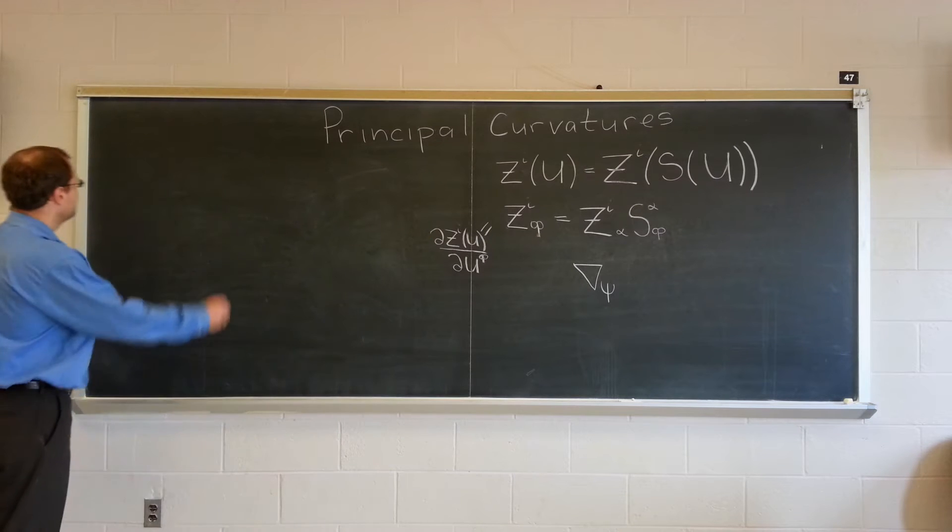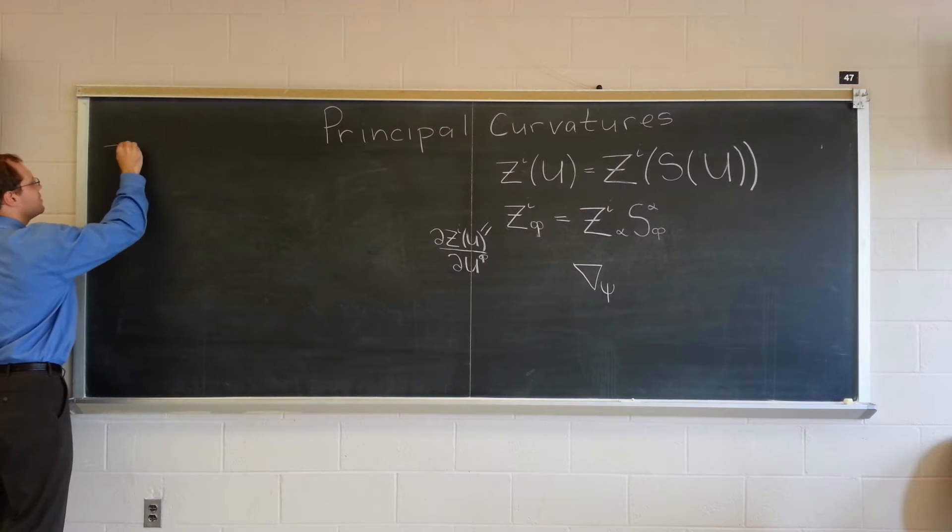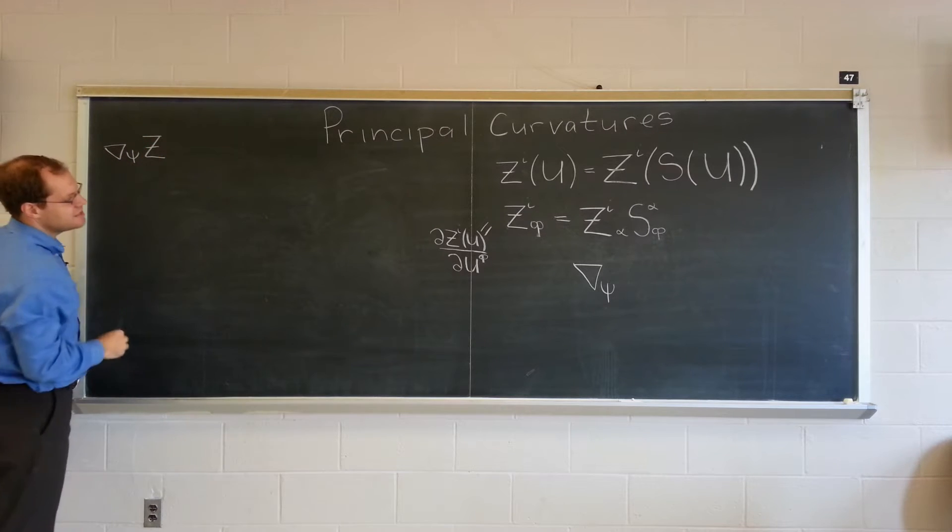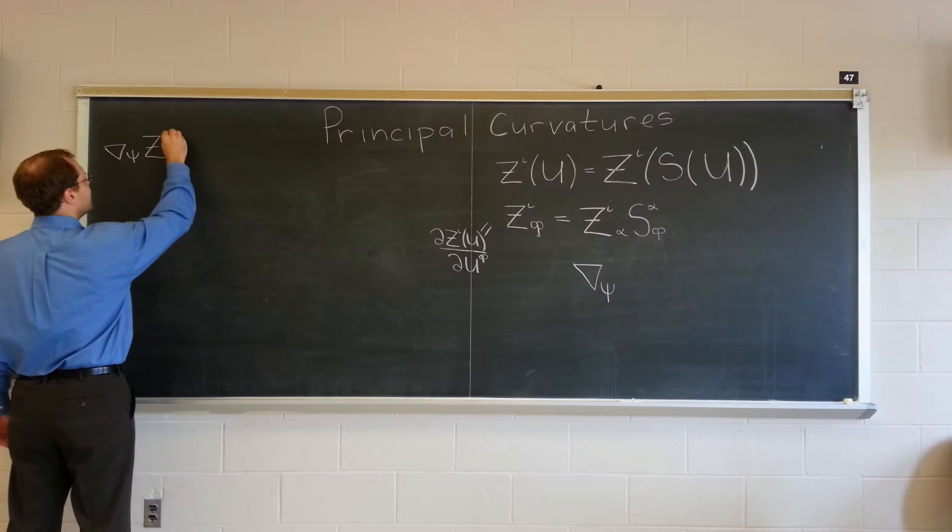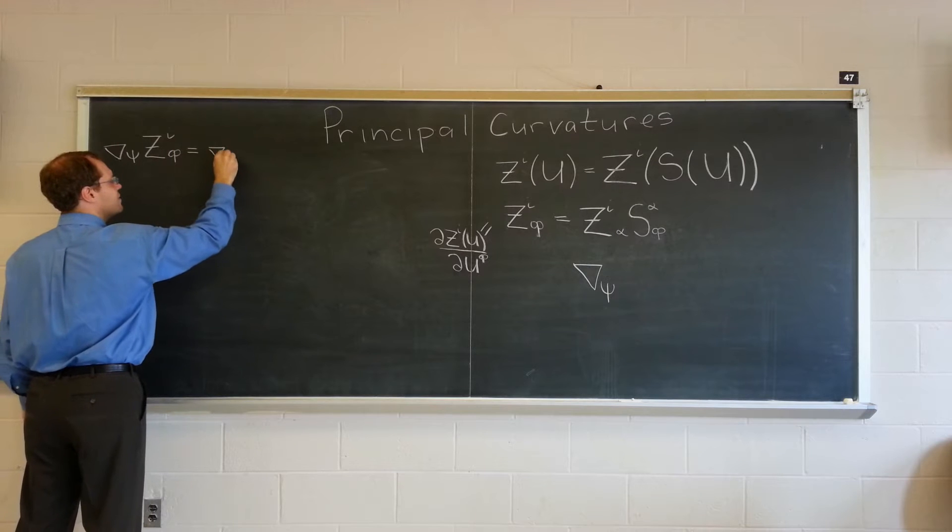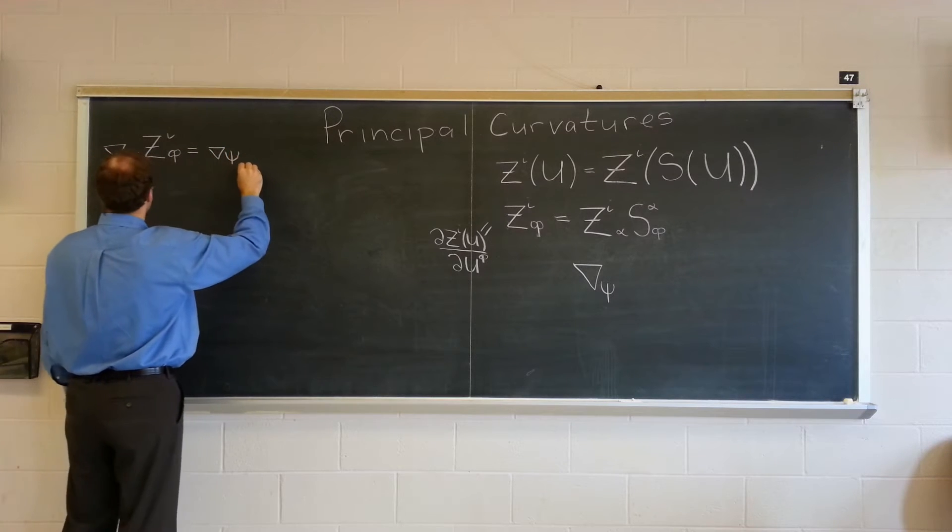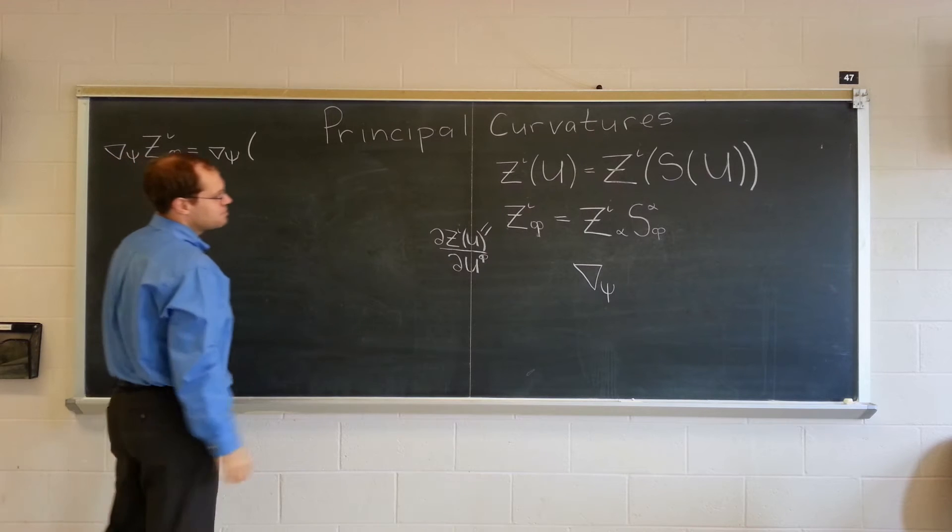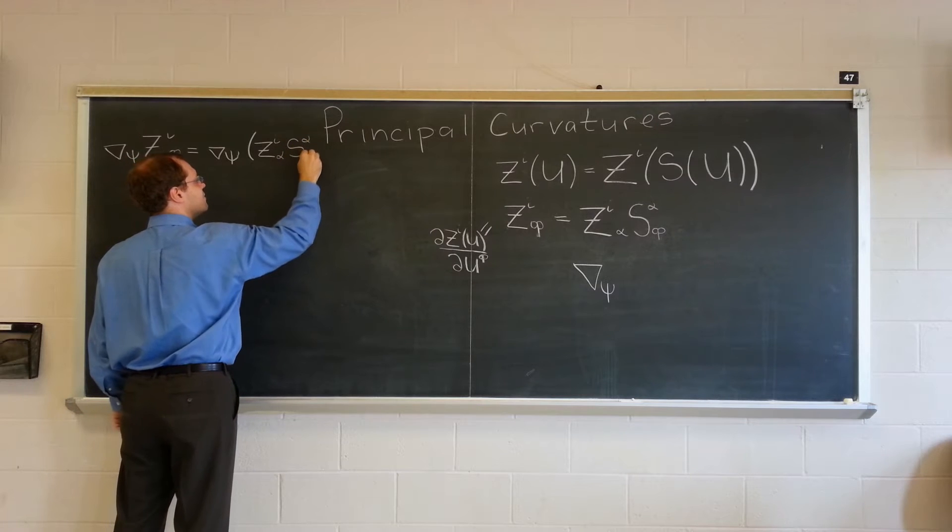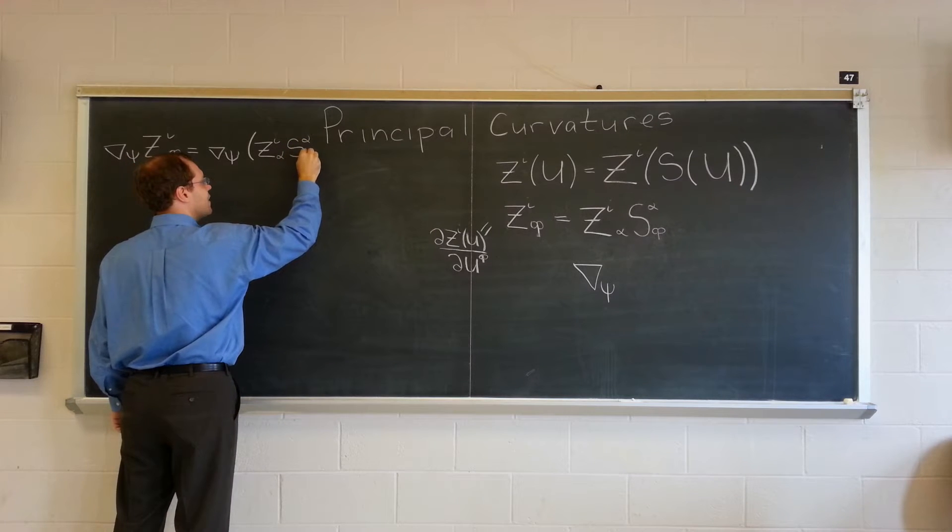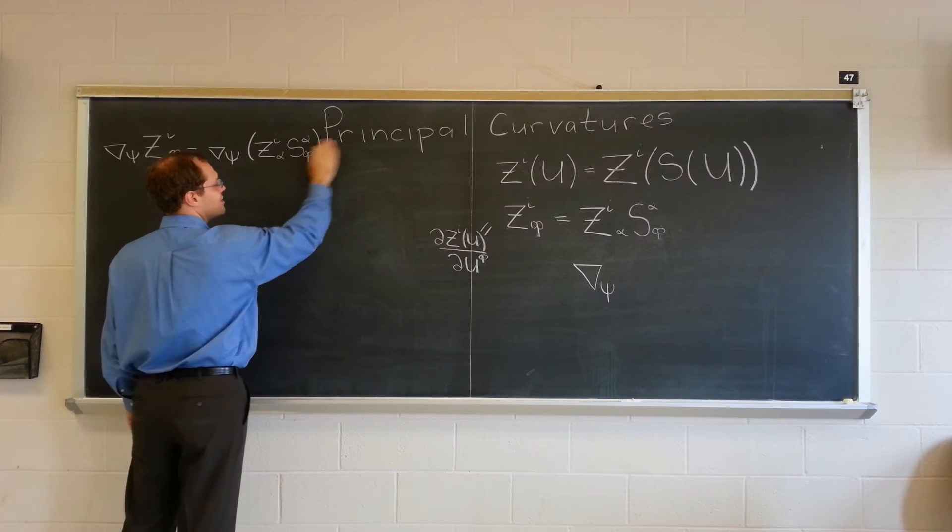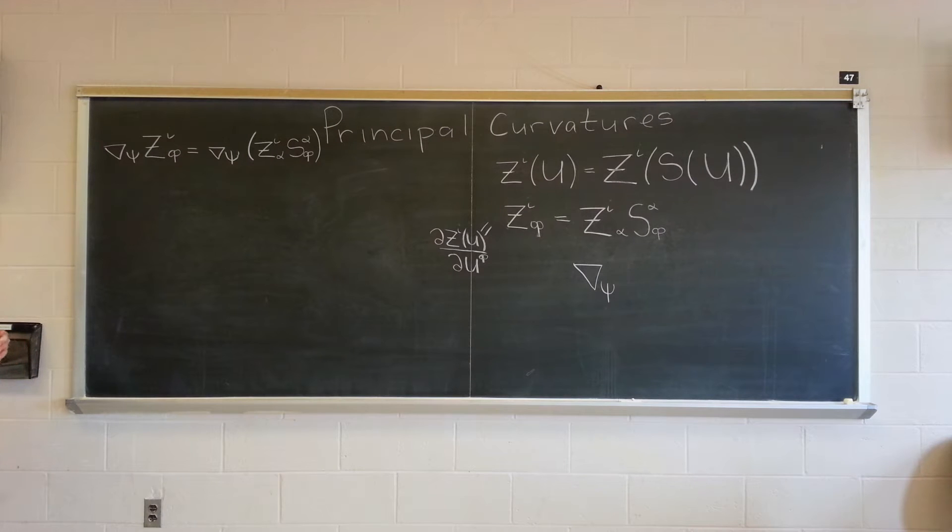So we'll be very careful and slow and deliberate. On the left-hand side we have this covariant derivative applied to the shift tensor z_i^φ, and on the right we will have this derivative applied to the product z_i^α s_α^φ. You can see that I chickened out from using the product rule right here because I knew I would clash with the title.